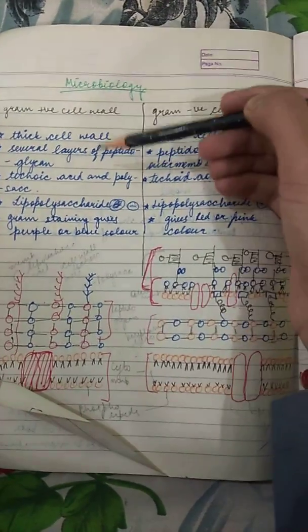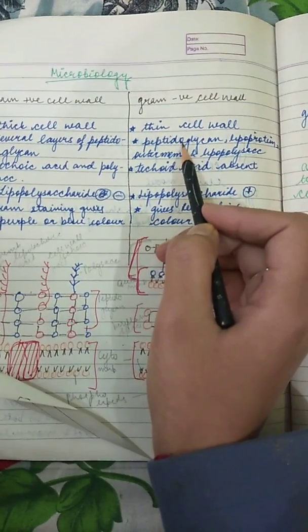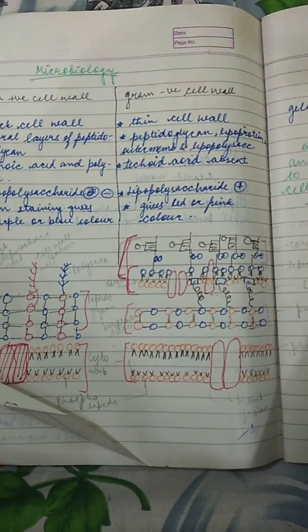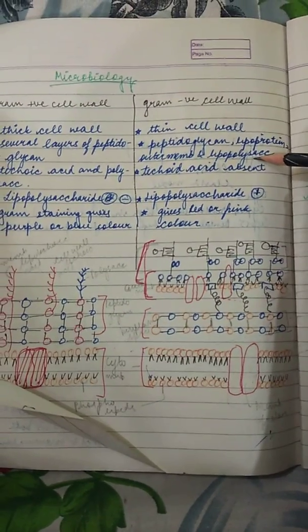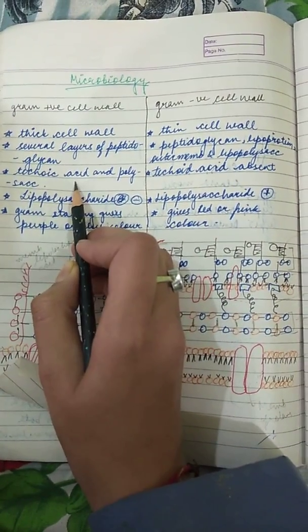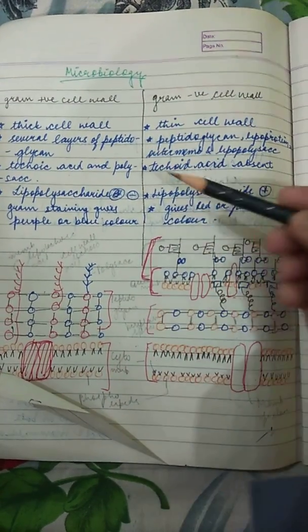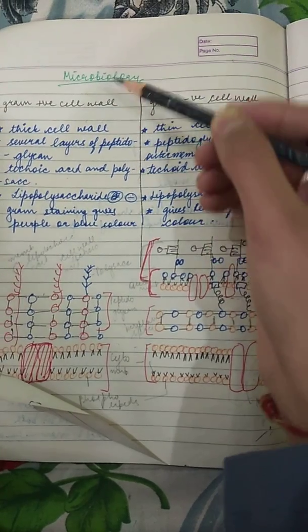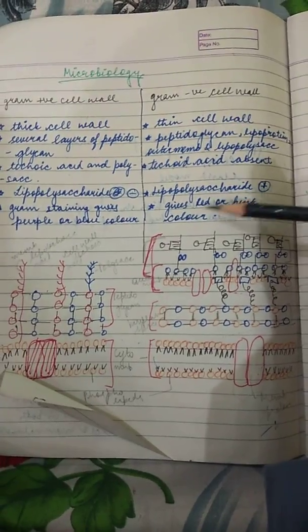Gram-positive cell wall is thick; gram-negative is thin. Gram-positive consists of several layers of peptidoglycan, whereas gram-negative has peptidoglycan but the outermost layer is lipoprotein and also has lipopolysaccharide — which is absent in gram-positive. Teichoic acid is present in gram-positive and absent in gram-negative. Gram-positive stains purple or blue, and gram-negative stains red or pink.